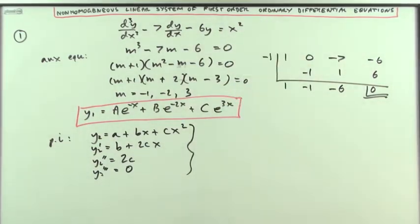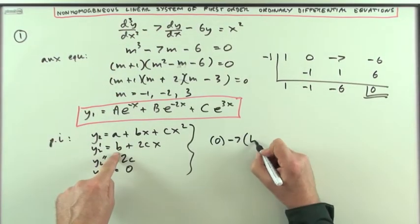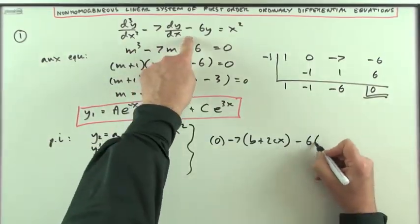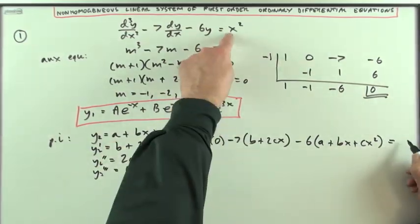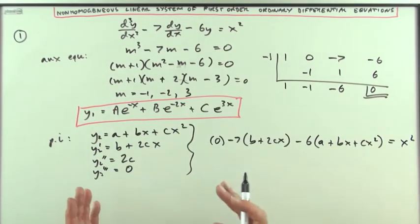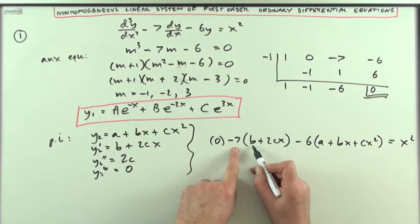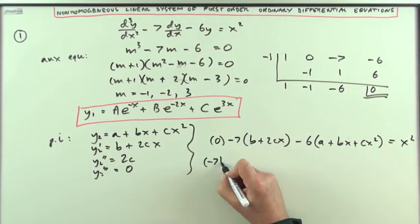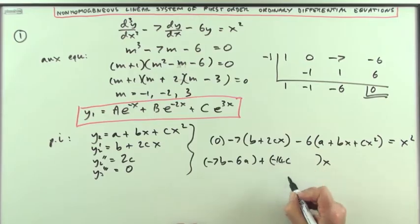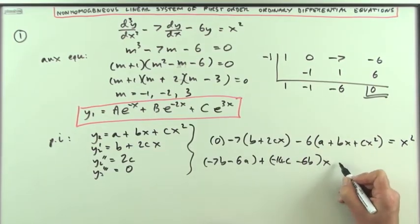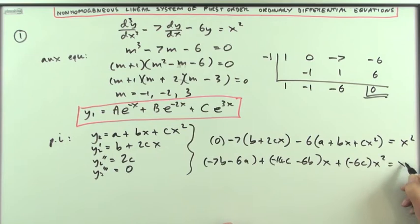Feed that back into the equation. There's just one lot of the third derivative, so that's 0. Then minus 7 lots of the first derivative — b plus 2cx — minus 6 lots of the actual value, a plus bx plus cx squared, should all equal x squared. Now separate them into the three types of terms to equate corresponding terms. The constant term is negative 7b minus 6a; the term in x is negative 14c minus 6b; and the term in x squared is just negative 6c, to equal x squared.